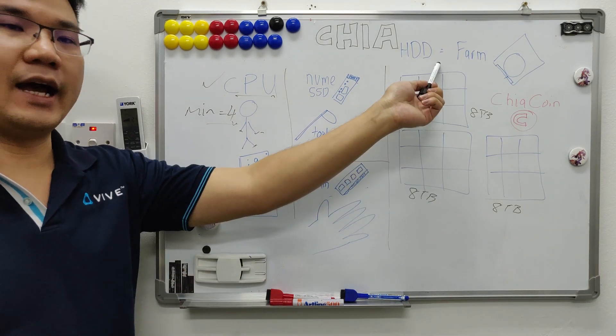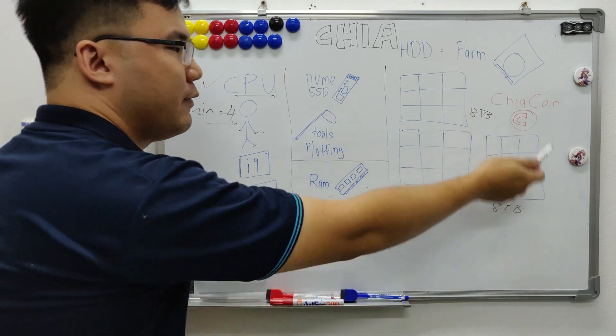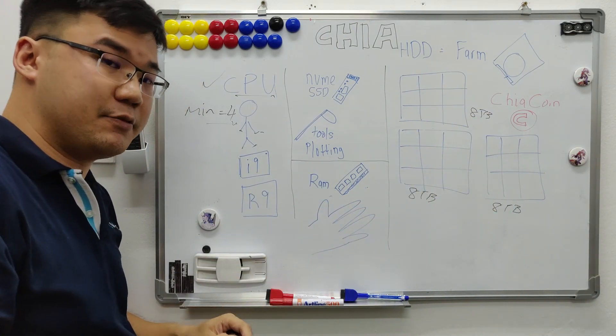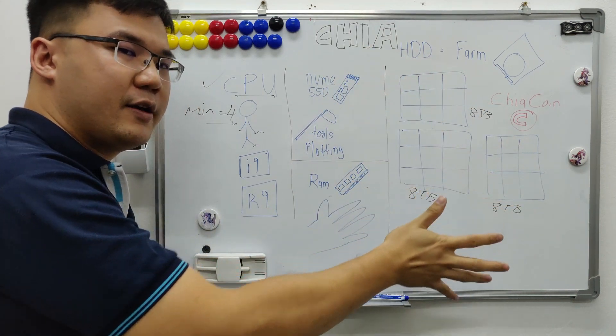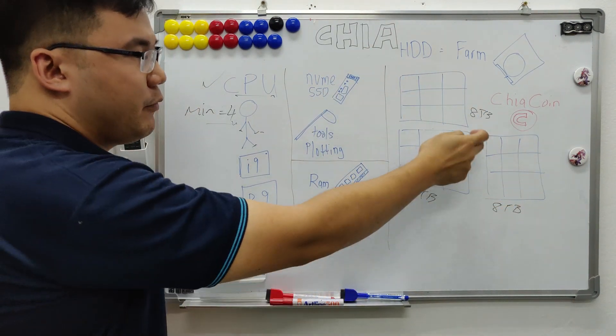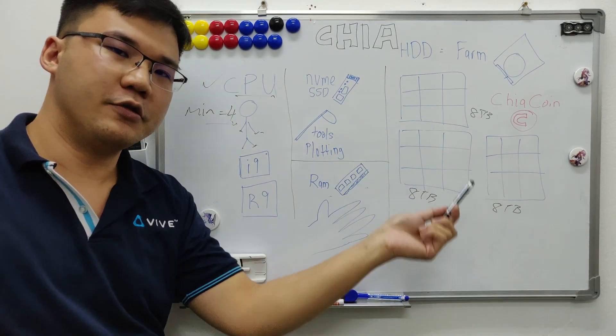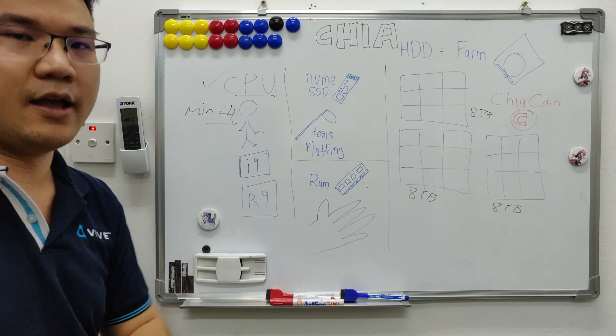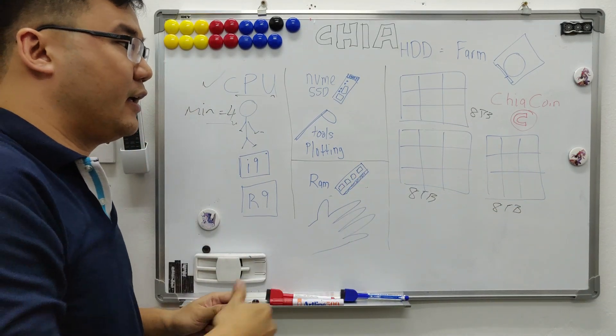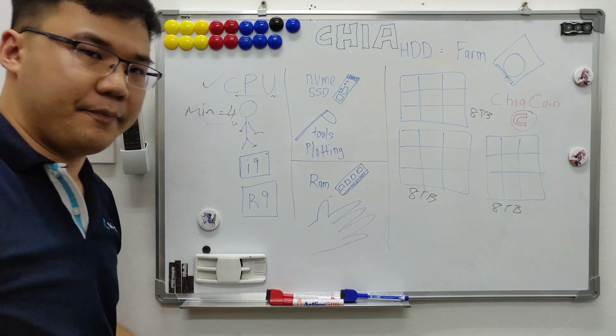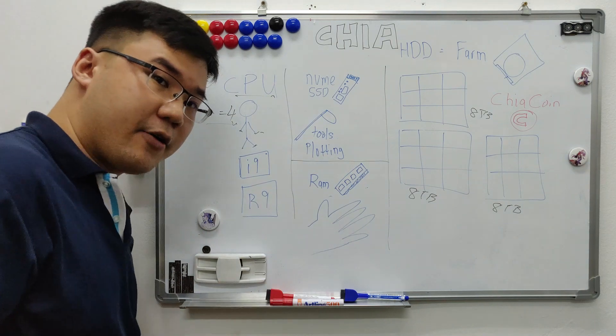So what do they work at? They work at the hard disk. The hard disk we call it our farm. It's like plots of lands, undeveloped lands. Your fresh hard disk you bought from store. Example we have 8 terabyte. But all these 8 terabytes cannot be used to farm your Chia coin yet because these lands are not developed yet.